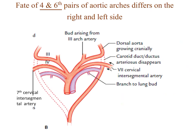The fate of the fourth and sixth pair of aortic arches differs on the right and left side. On the right side, the fourth pharyngeal arch artery together with the right seventh cervical intersegmental artery will form the right subclavian artery. But on the left side, the seventh cervical intersegmental artery alone will form the left subclavian artery.